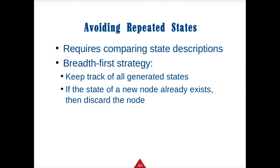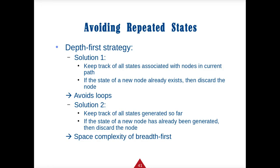For state tracking: with breadth-first, keep track of all generated states — if a new node already exists, don't search it. With depth-first, keep track of all states on the current path and discard any new node that already exists there. You do have to store different nodes, but using a hash table avoids loops. A second solution is to keep track of everything generated so far and discard already-generated nodes — for both cases, you need accounting to track everything.